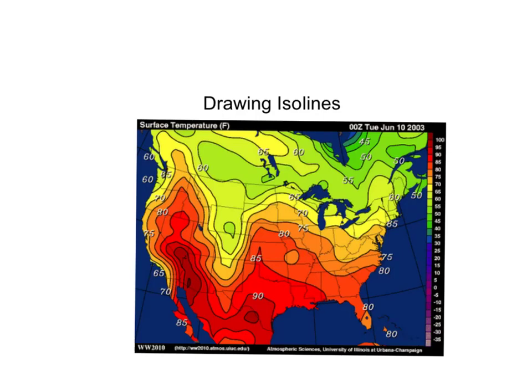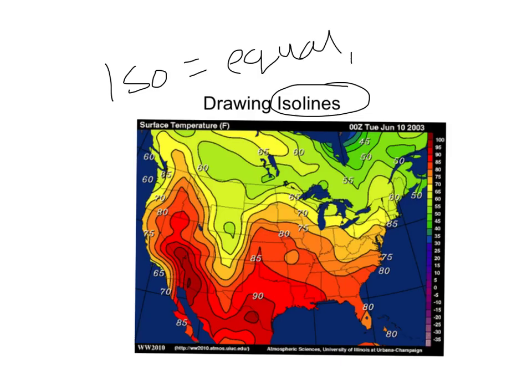Now that you know some of the symbols on a weather map, we're going to be talking about how weather maps are created, and that is by drawing ISO lines. ISO means equal or the same, so they are lines on a map that connect equal amounts, equal numbers — things like temperatures and pressures.